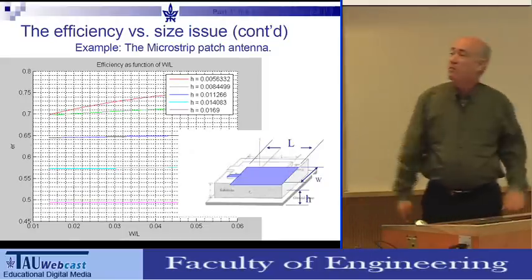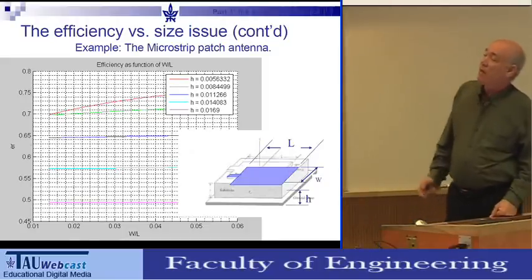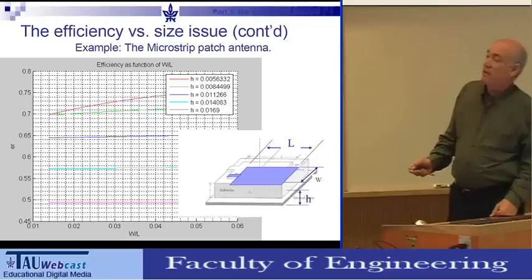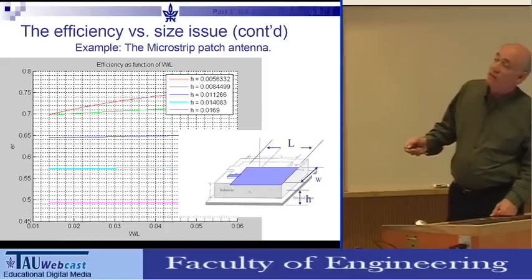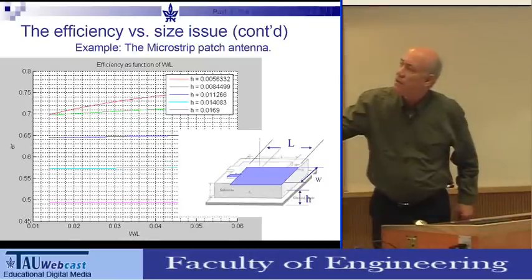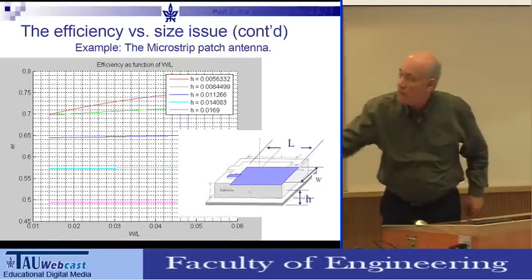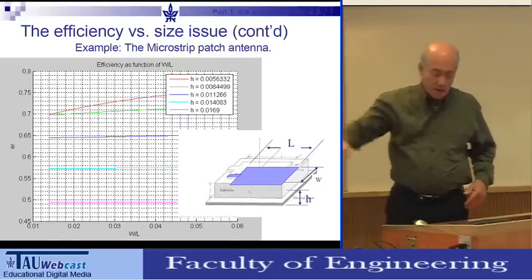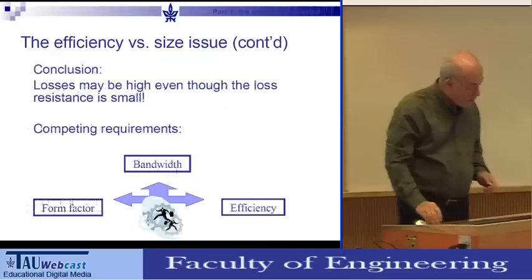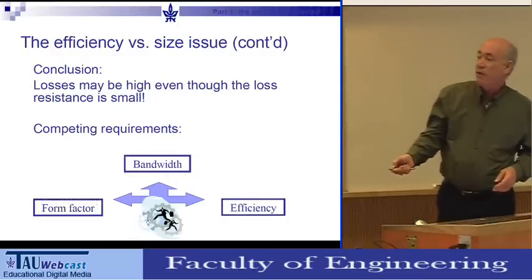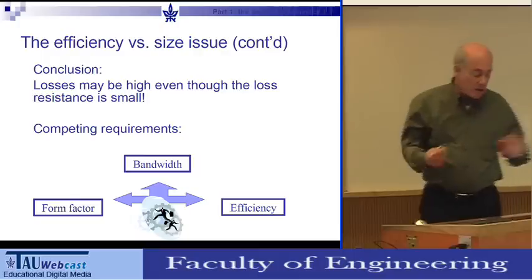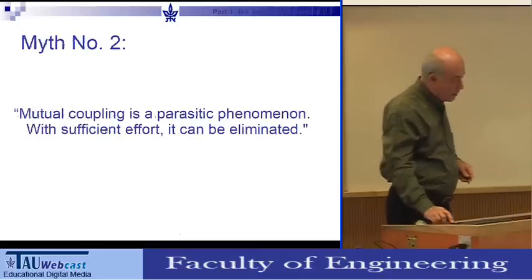You can see this happening with microstrip patch antennas. As you take the substrate thickness and decrease it, the efficiency drops. We have competing issues: efficiency, form factor (size), and bandwidth — all competing with each other with no good way to reconcile them simultaneously.